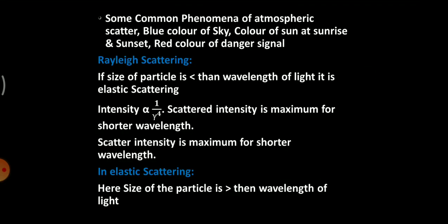Some common examples of scattering of light include: the blue colour of sky, which is mainly because of scattering of light; the colour of the sun at sunrise and sunset; and the red colour of danger signals — you might have seen red colour lights in traffic signals. All of these are related to scattering of light, and we will study these concepts in the coming slides.